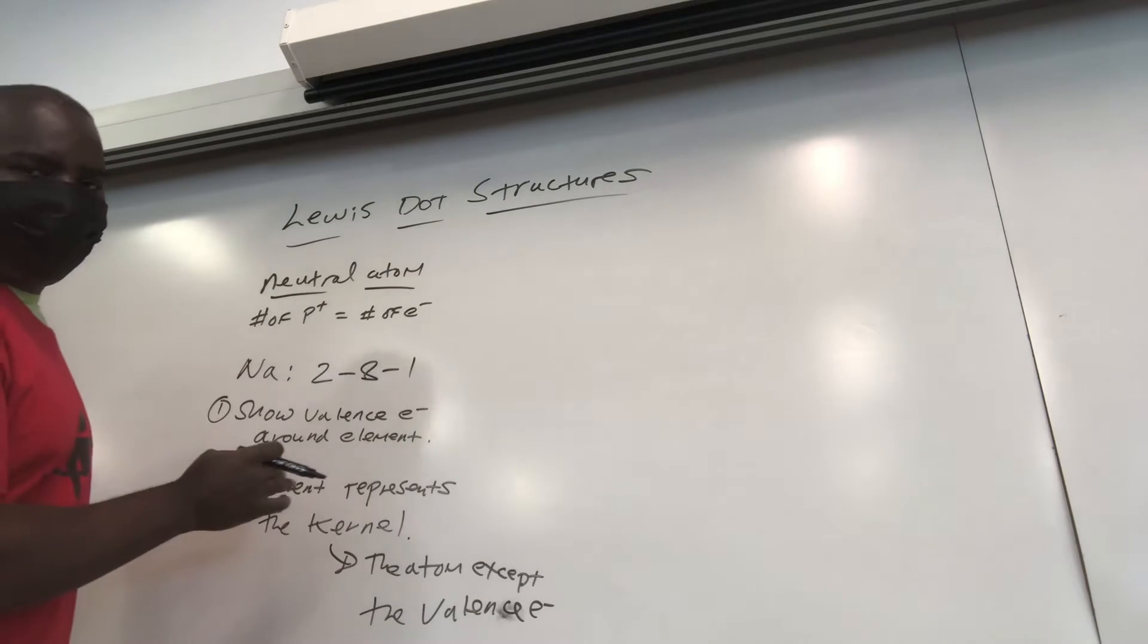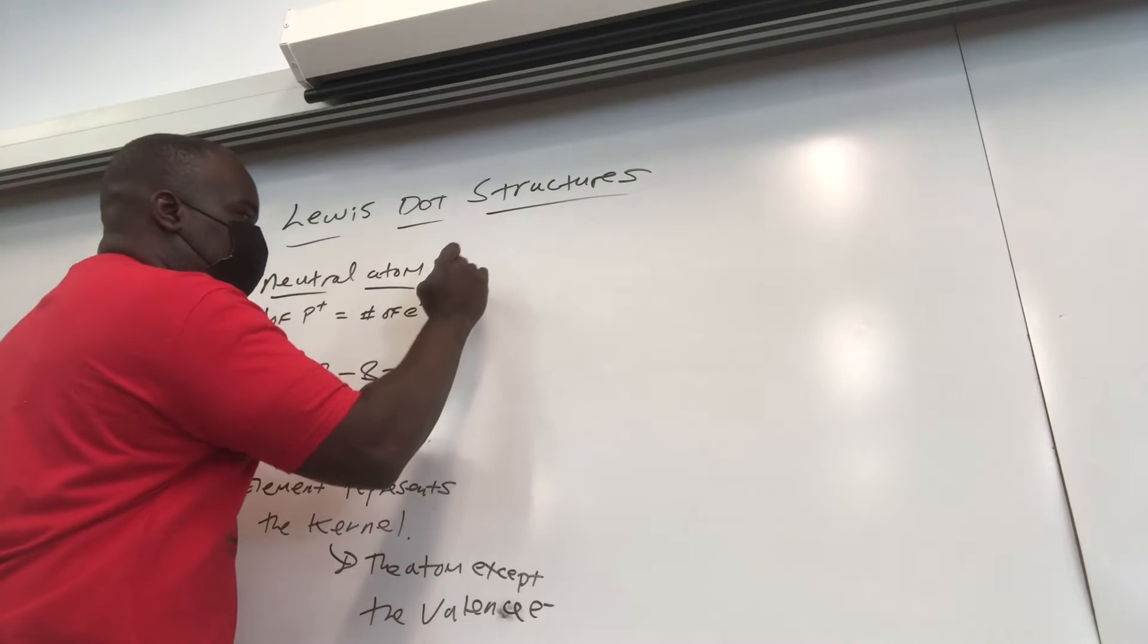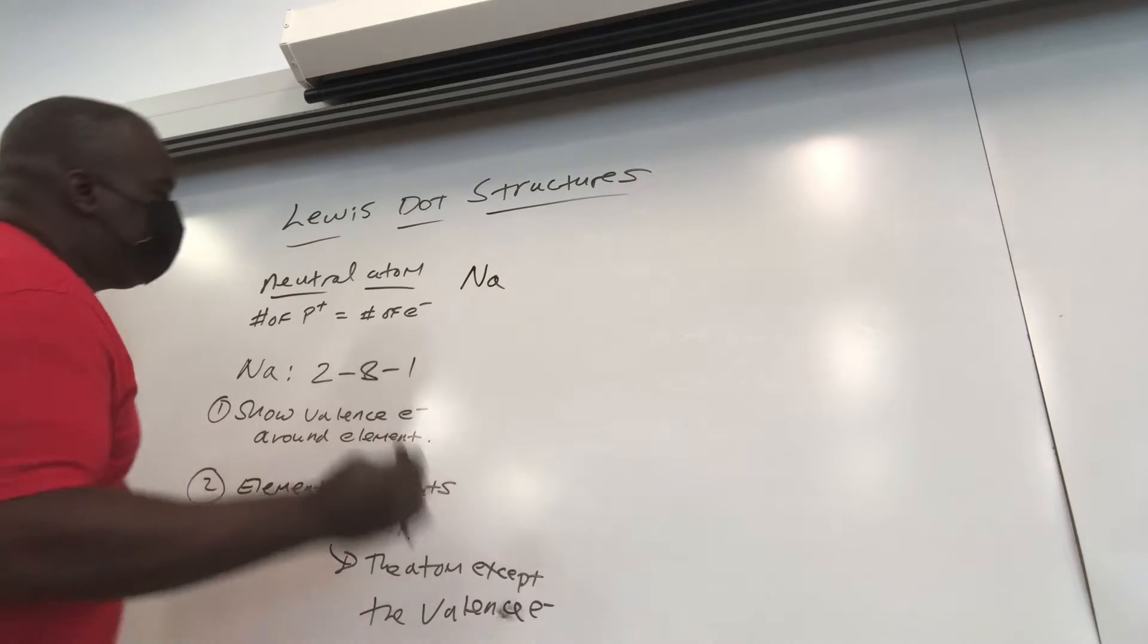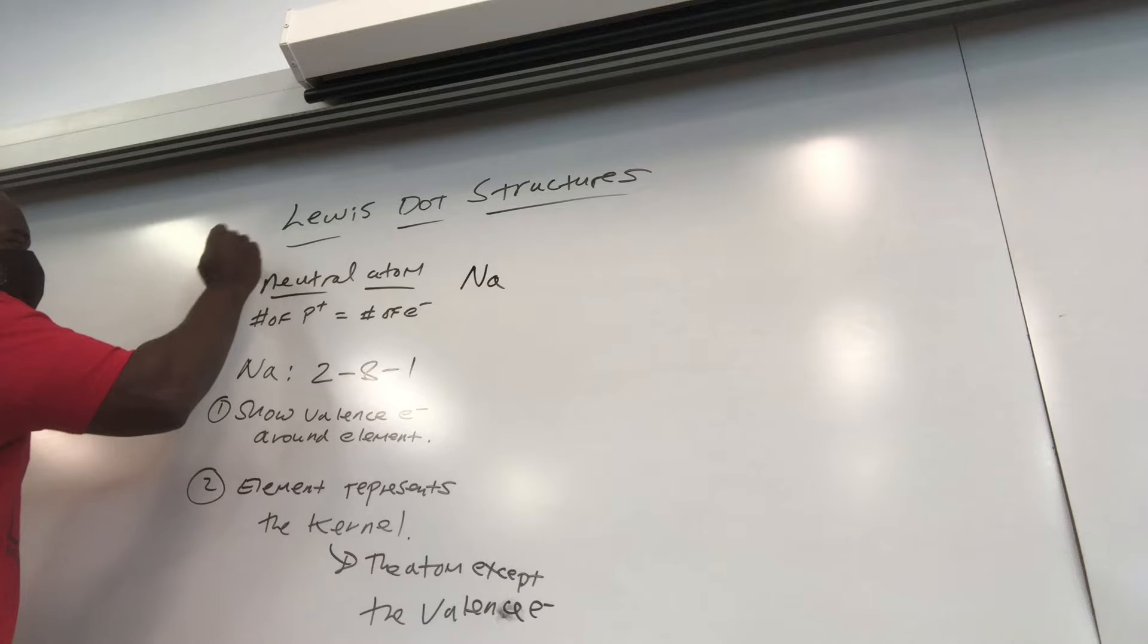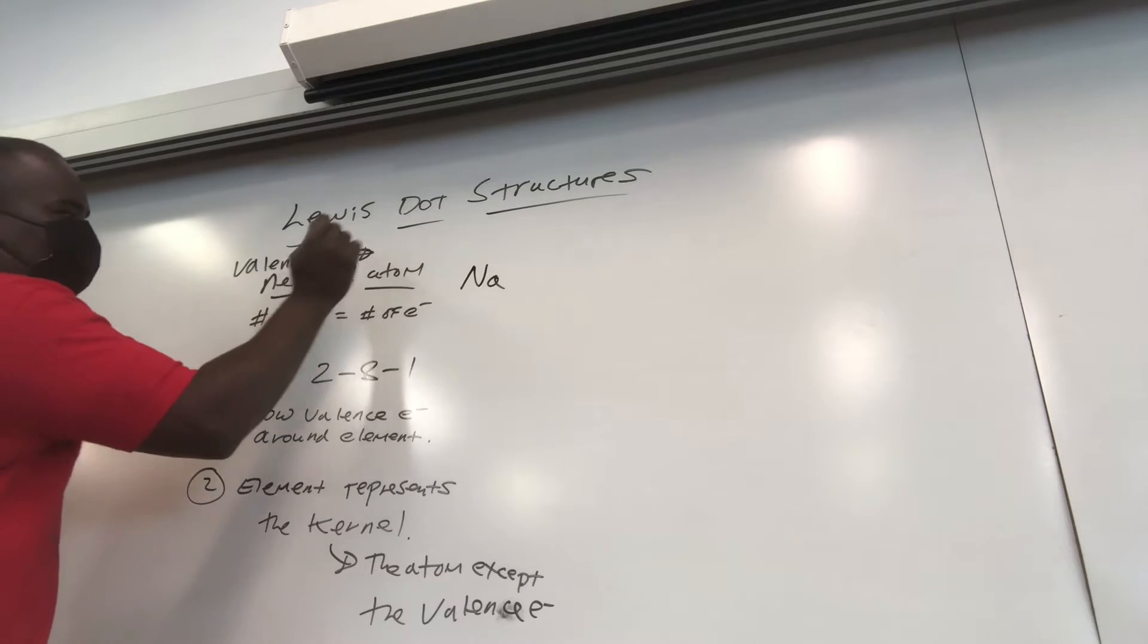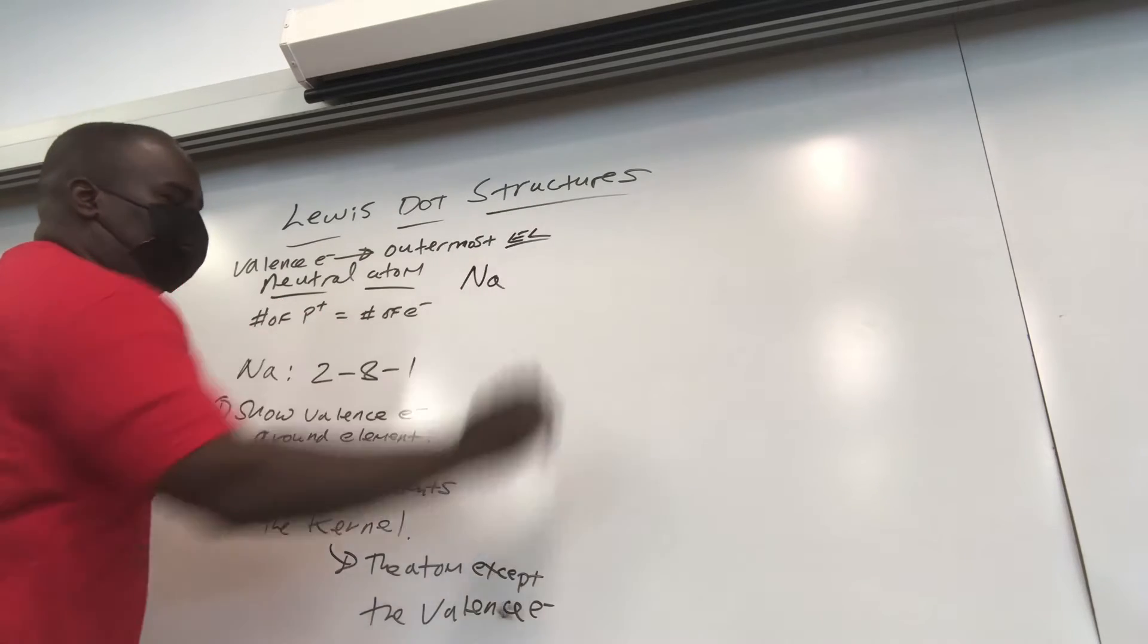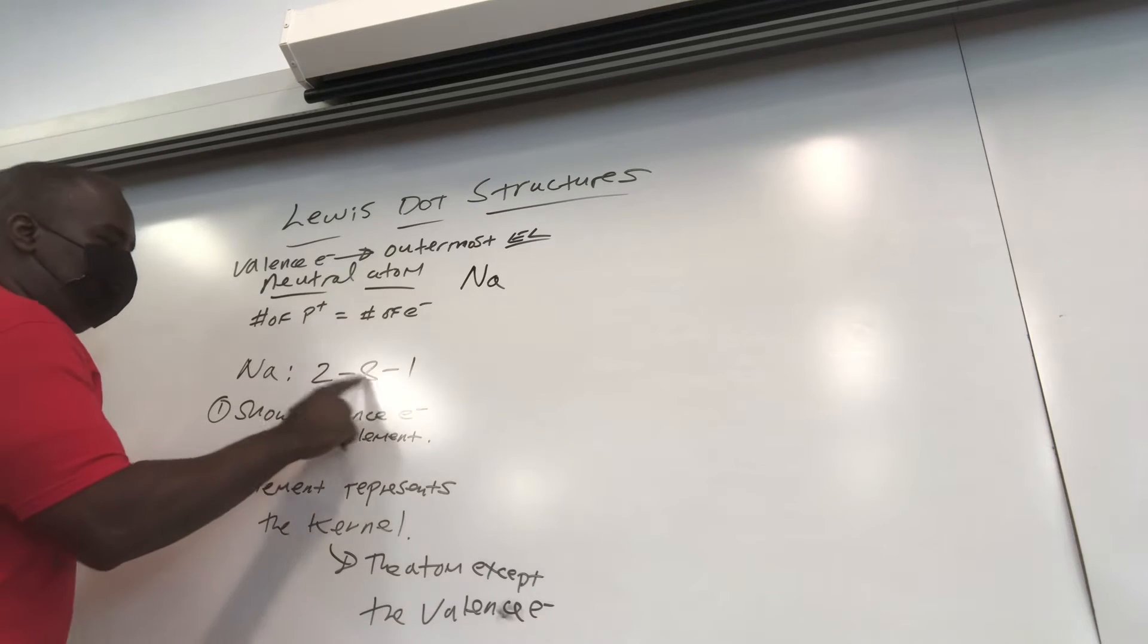So if you have to do the dot structure for sodium, you write down Na - that's your kernel - and now you represent your valence electrons. Now you have to know what valence electrons are. Valence electrons are the electrons in the outermost energy level or outermost shell. So how many valence electrons do we have? You got 2, 8, 1.